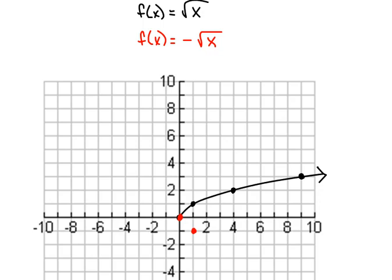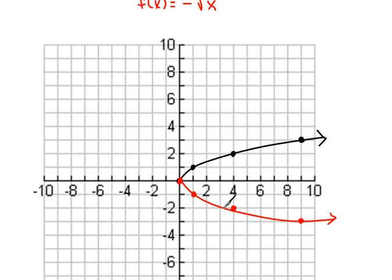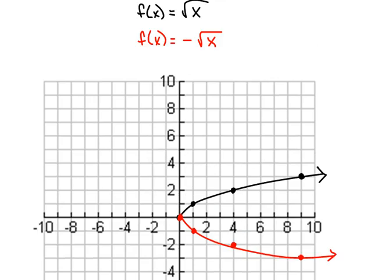Do you see what I'm talking about with our symmetry? If we use an x-value of 4, the square root of 4 would be 2, and the opposite of that would be negative 2. If we use an x-value of 9, the square root of 9 is 3, and the opposite of that is negative 3 — that would be this point right down here. So now we have our graph. This red curve here is negative square root of x. Putting a negative in front of a function reflects it about the x-axis, causing that symmetry we've talked about before.